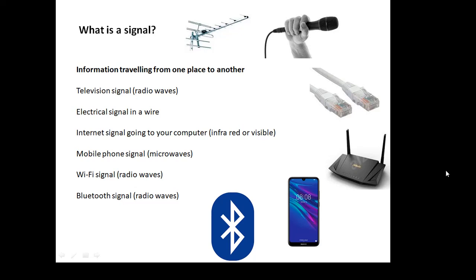A signal is basically information traveling from one place to another. It could be a television signal which uses radio waves, an electrical signal in a wire. If you talk into a microphone, that produces an electrical signal which travels through the wire. It could be an internet signal going to your computer through an ethernet cable. That might be infrared or it might be visible through a fiber optic cable.